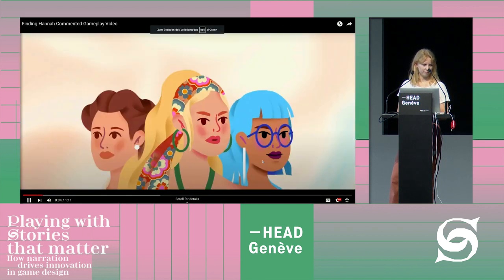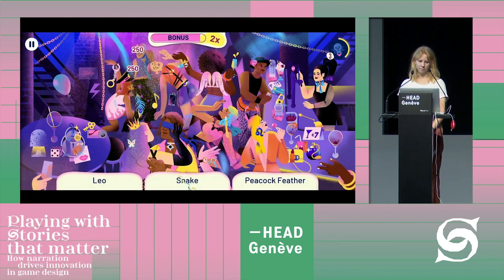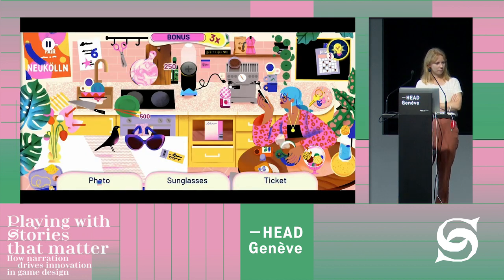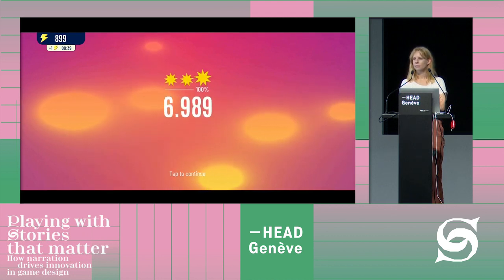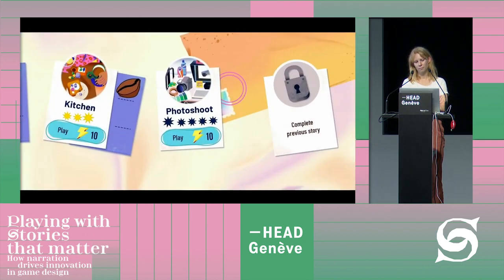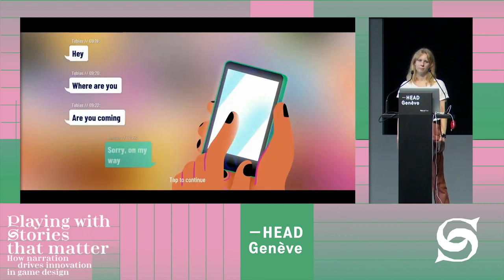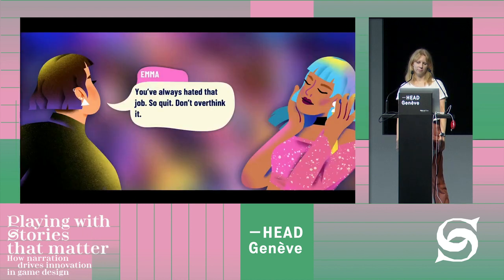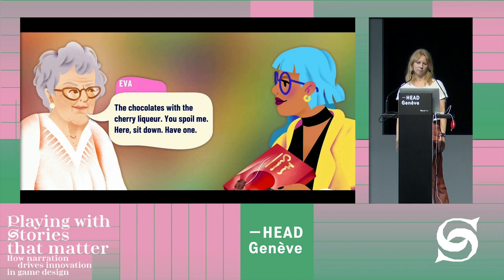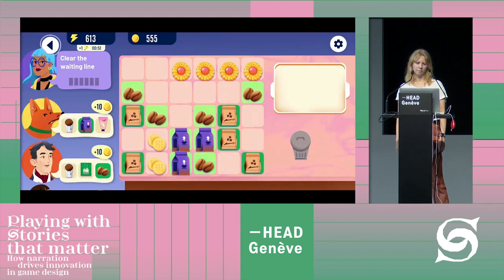Now I'll show you a trailer for our first title, 'Finding Hannah' — a hidden object game following three women searching for happiness. Hannah wanted to be an artist but instead does graphic design for demanding corporate clients. You visit richly illustrated locations, find hidden objects, merge items, and earn story progress. The game features three generations of women — Hannah, her mother, and grandmother — dealing with realistic, relatable problems across different eras.